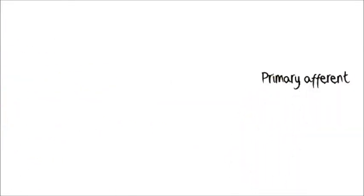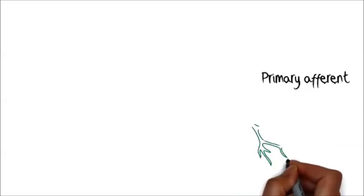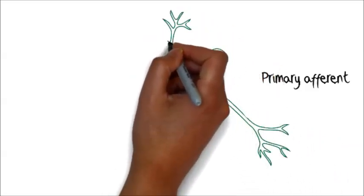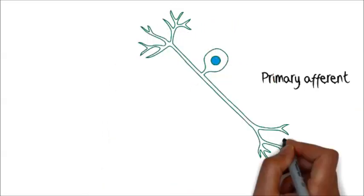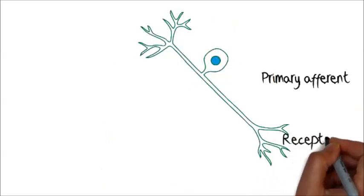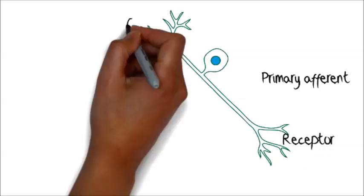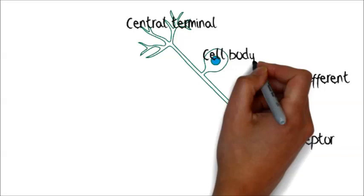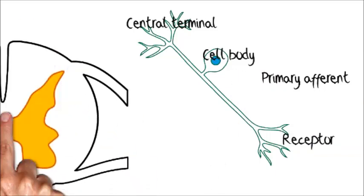Looking at a primary afferent you'll see that it's a pseudo unipolar neuron meaning from the cell body the axon splits and heads peripherally to the receptor end and then centrally to the central terminal and the cell body again is located in the dorsal root ganglion.